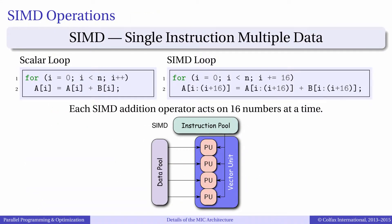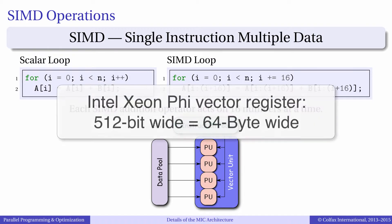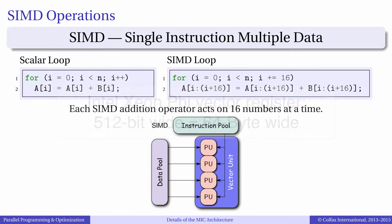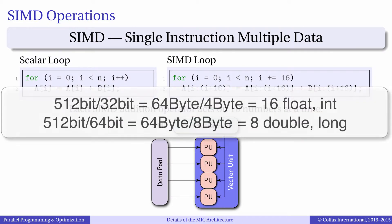Vector instructions in Intel architectures are a class of parallel operations which can apply one instruction to multiple data elements for greater throughput. In Intel Xeon Phi Coprocessors, vector registers that contain data for the vector instructions are 512-bit wide. This means that each core can process 16 single-precision data values, 16 32-bit integers, or 8 double-precision data points, or 8 long integers at a time.